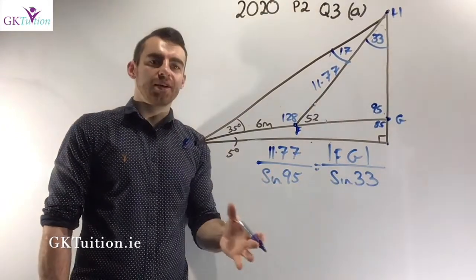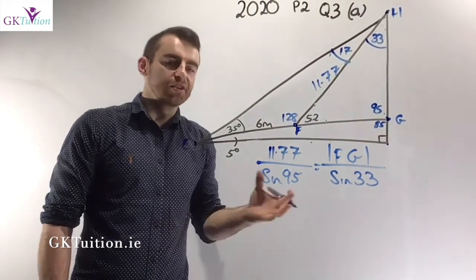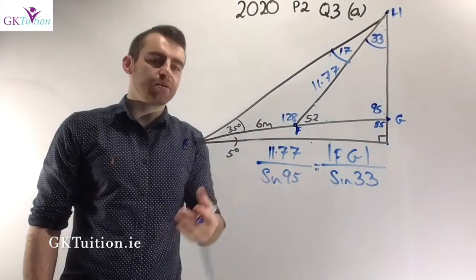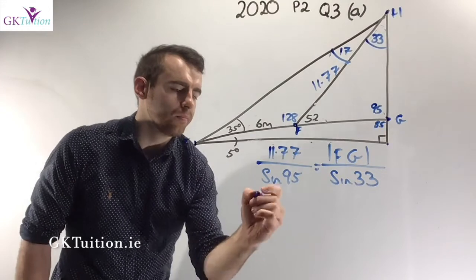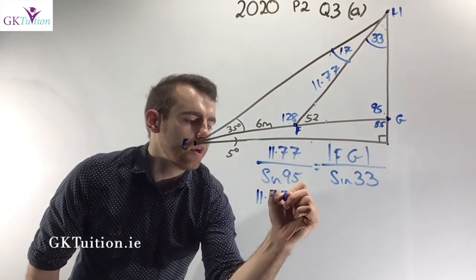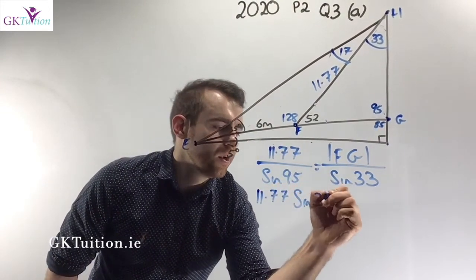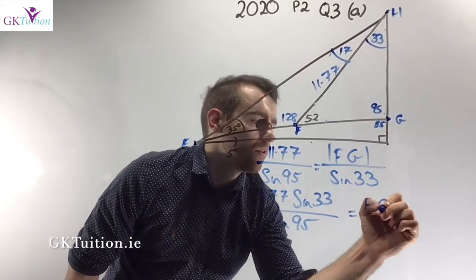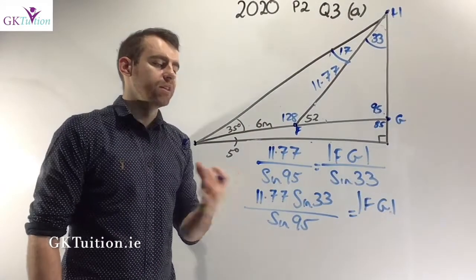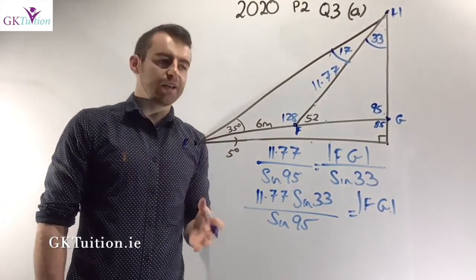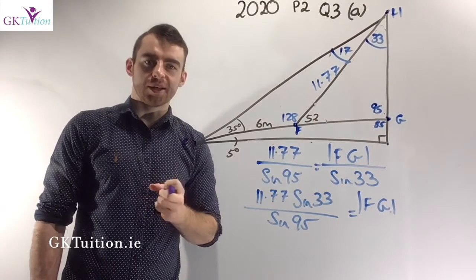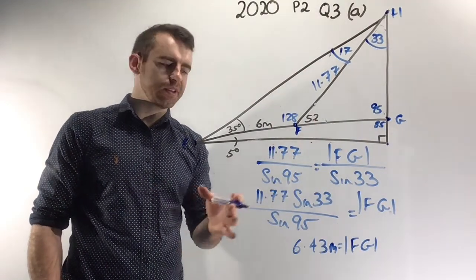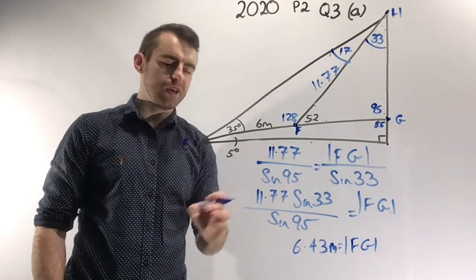Now I finally have an equation with FG in it. I simplify it the same way as before — multiply both sides by sine 33. The left-hand side becomes 11.77 times sine 33 over sine 95. Plugging all of this into the calculator, my final answer for the distance from F to G is 6.43 meters.